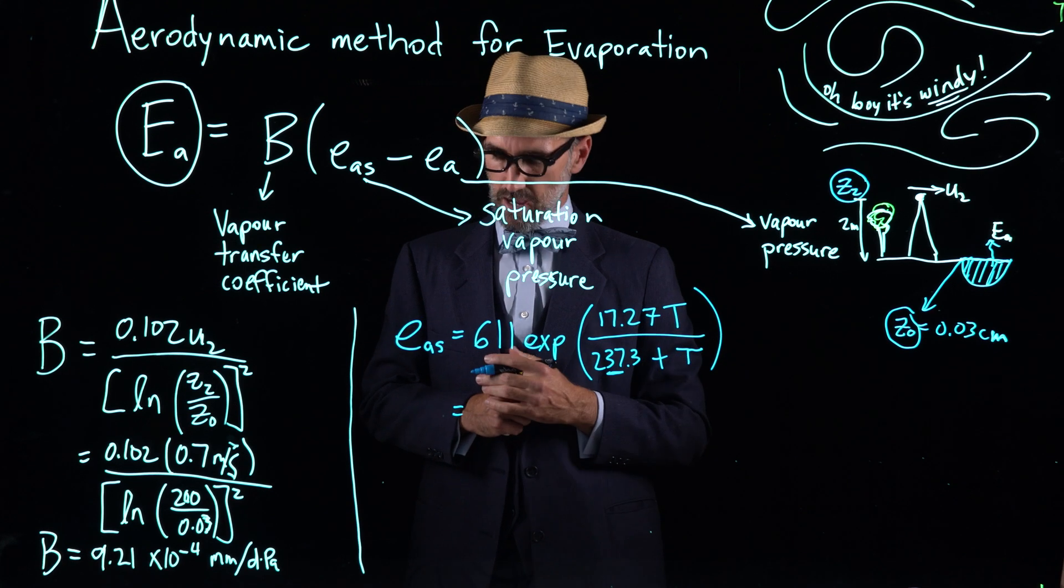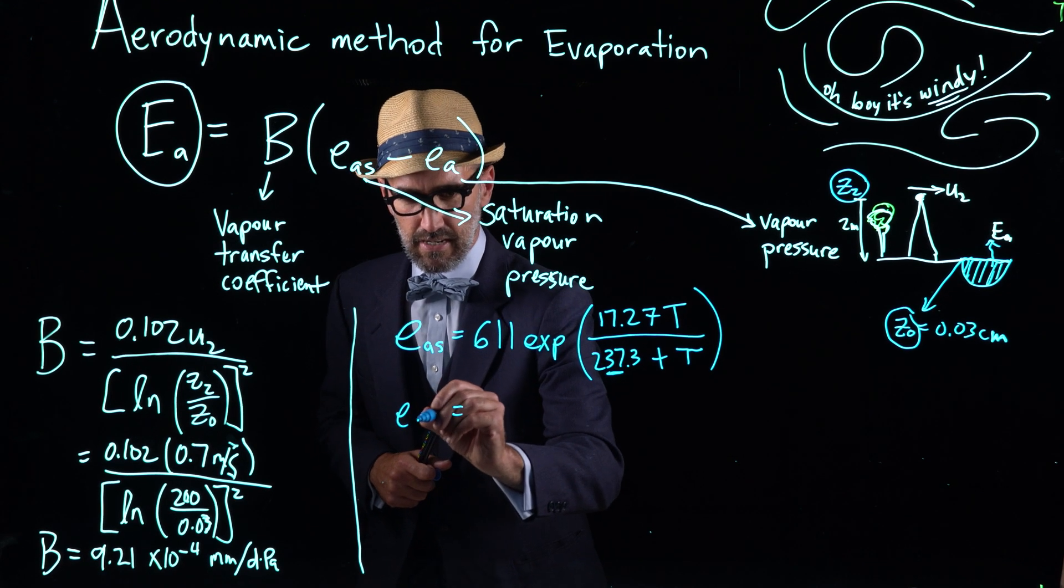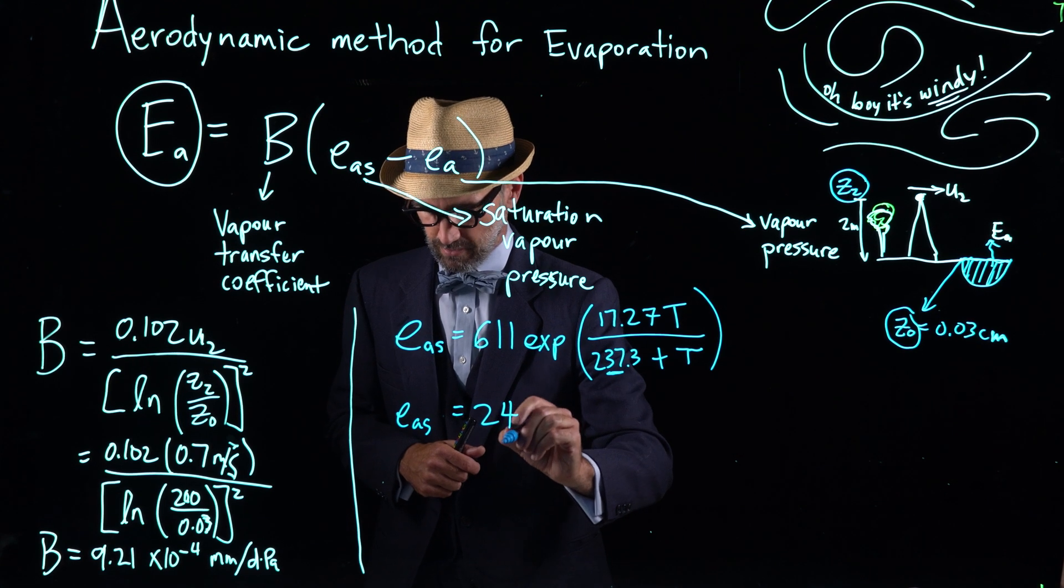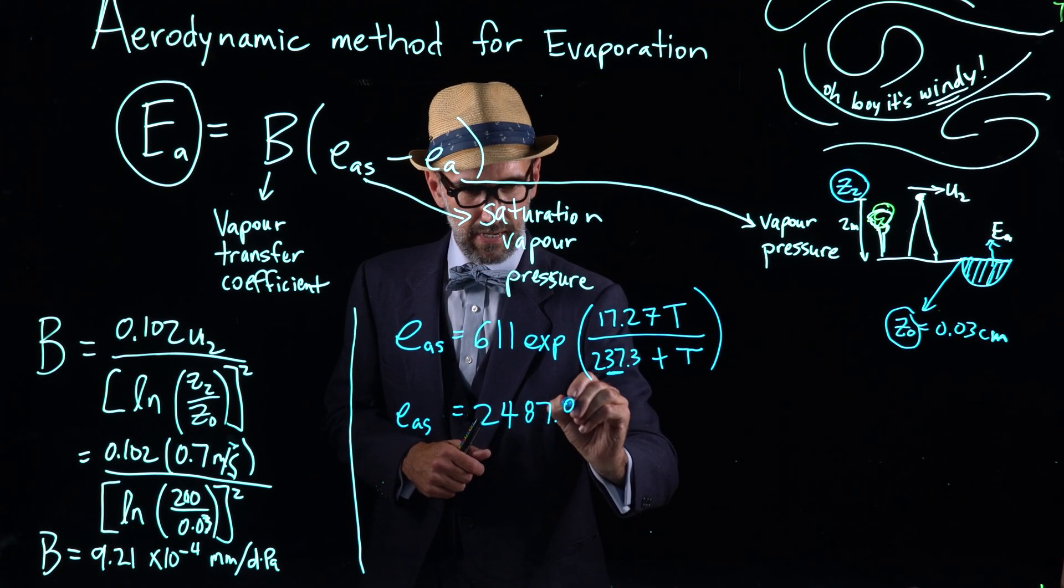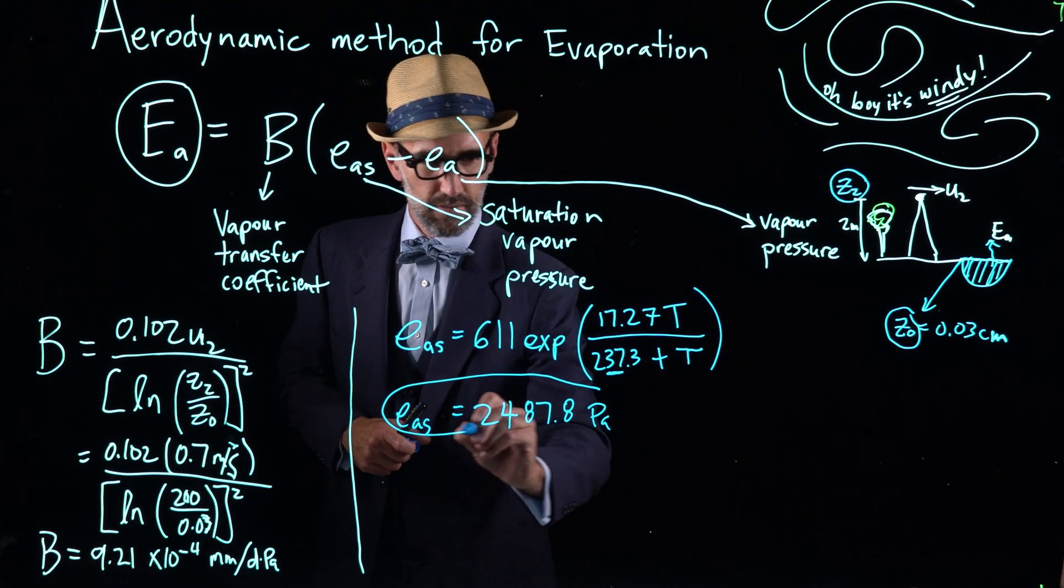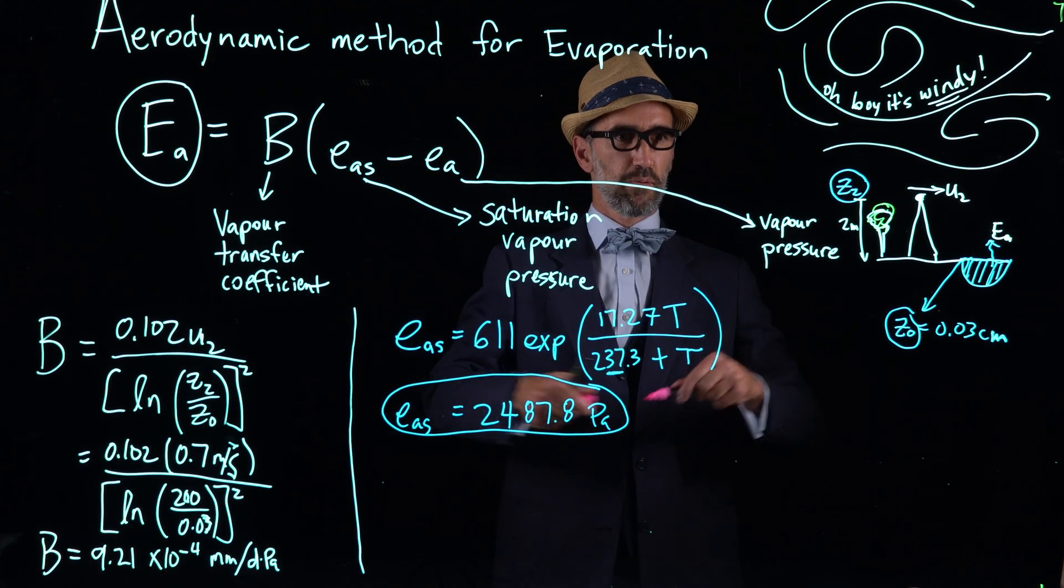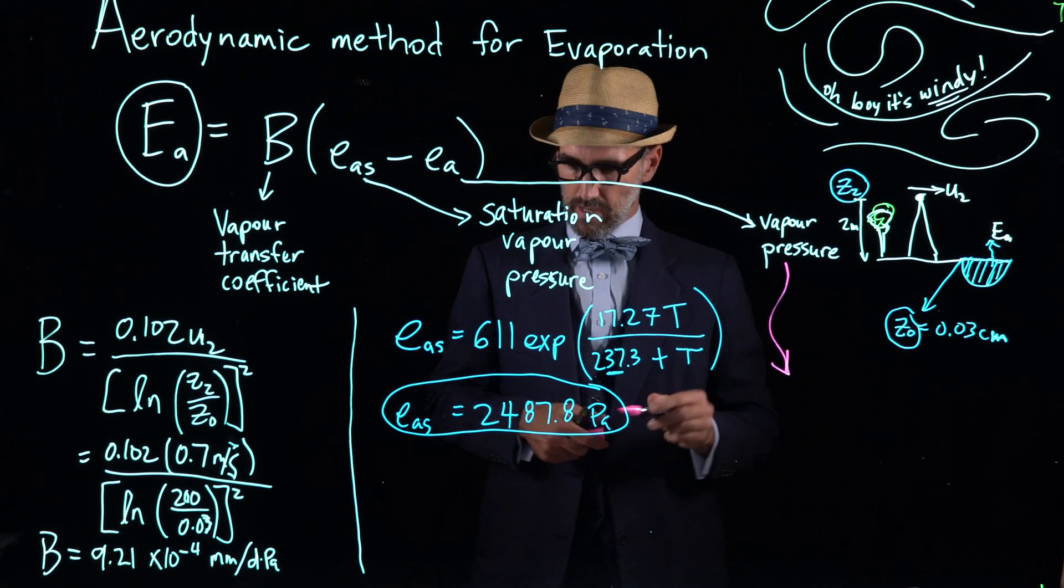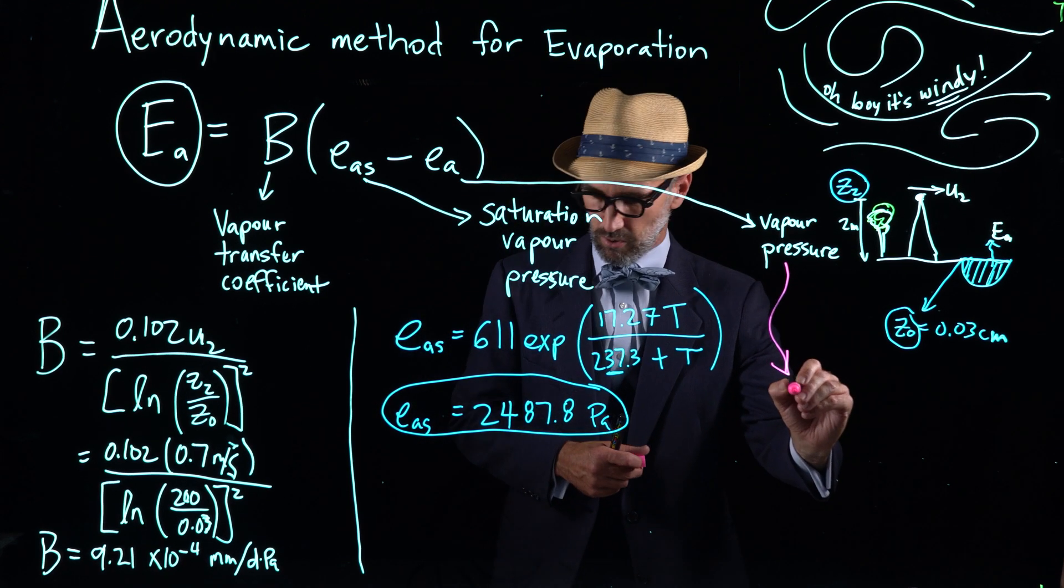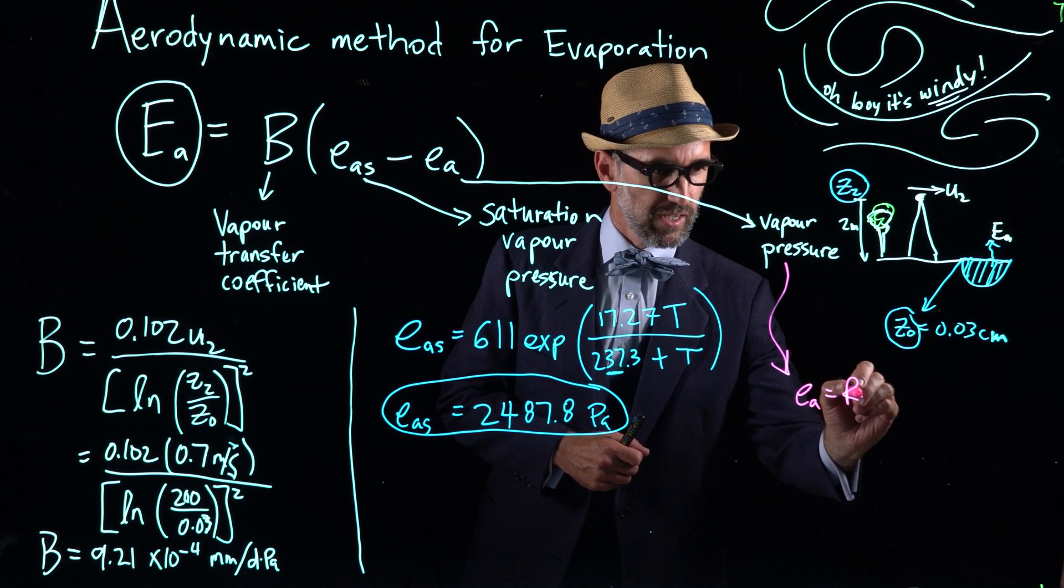So here again we substitute in 21 degrees C and the resultant e sub AS is 2487.8 pascals. That's our second variable in this calculation. The third variable is vapor pressure.